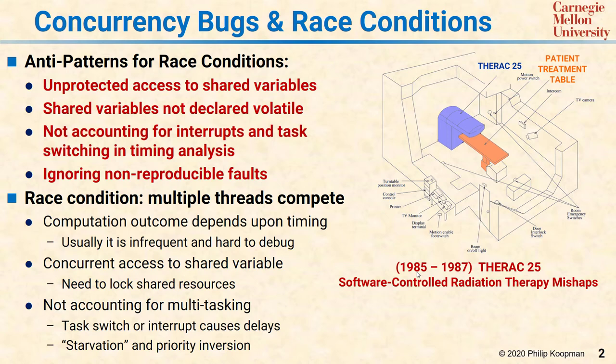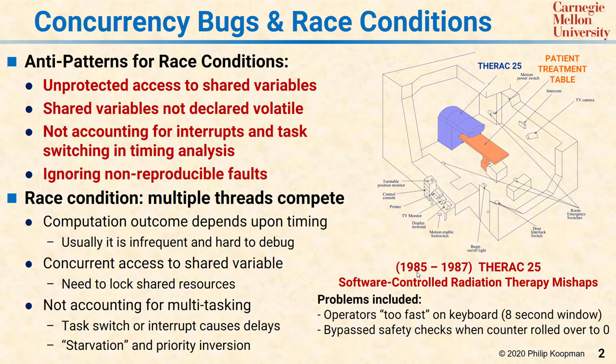The story is long and complicated and well worth the read for anyone who does software safety. The relevant problems for race conditions included that if the operators typed on the keyboard a little bit too fast during a particular 8-second window, they would get an incorrect dosage. A completely different race condition was that the system bypassed safety checks when a counter rolled over — every once in a while when the counter rolled over to zero, during that time the safety checks would be bypassed. Both of these are concurrency bugs or race conditions that ultimately resulted in fatalities.